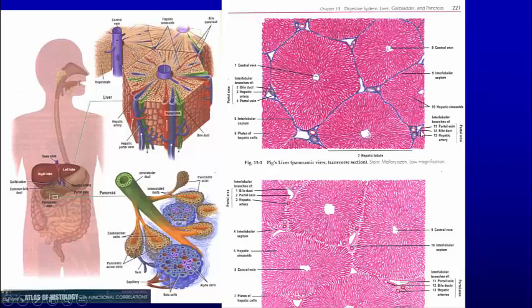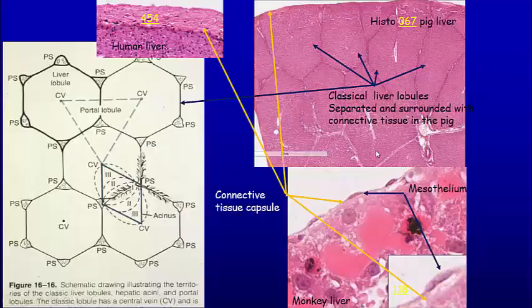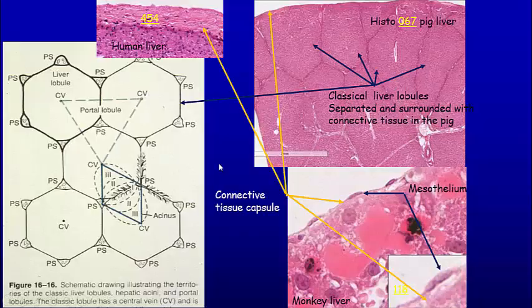The blood from the portal vein coming from the GI tract — small intestines mainly — and the hepatic artery gives oxygenated blood, and that blood moves toward the central vein. The bile goes the other way; one of the three components is the bile duct taking the bile out. Blood goes toward the central vein, the bile goes toward the triad. The liver has a capsule and outside that would be a mesothelium. Here we see the mesothelial cells — squamous cells located around the liver. Here we see the classical lobules in the pig with connective tissue around them, so we can see individual classical lobules where blood runs from the portal radical toward the central vein.